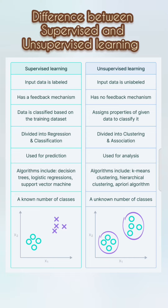The difference between supervised learning and unsupervised learning. Point one: in supervised learning, input data is labeled, whereas in unsupervised learning, input data is unlabeled. Point two: supervised learning has a feedback mechanism, whereas in unsupervised learning there is no feedback mechanism.